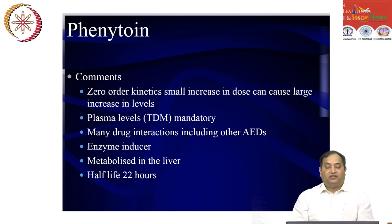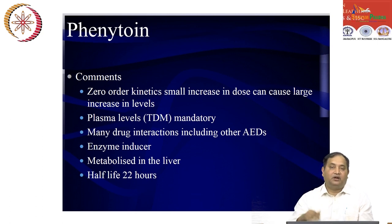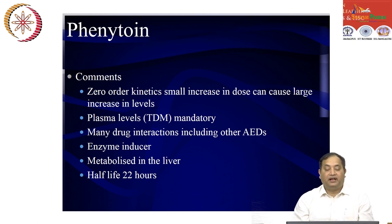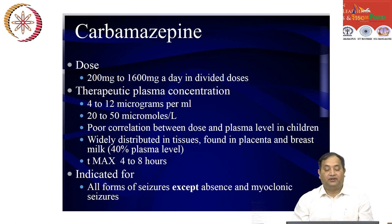Phenytoin follows zero-order kinetics, meaning a small dose increase can cause a large increase in drug levels. TDM is mandatory, with an upper limit of 20 micrograms per ml. It is metabolized by cytochrome P450 2C9 and 2C19, so concomitant medications must be assessed carefully since phenytoin is an enzyme inducer.